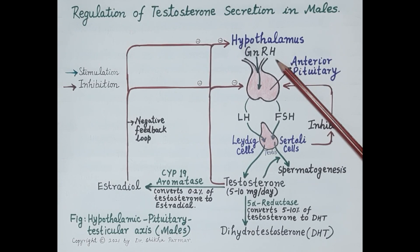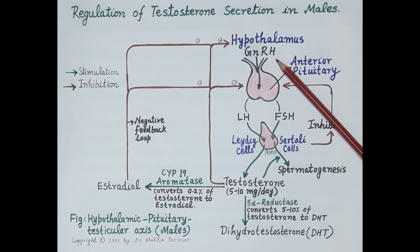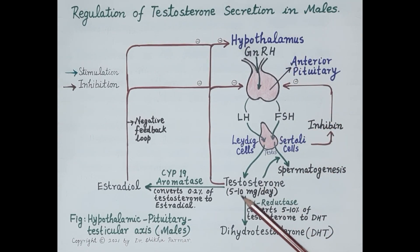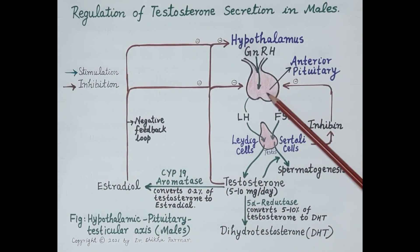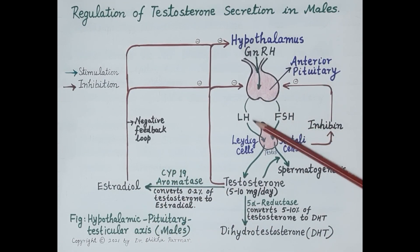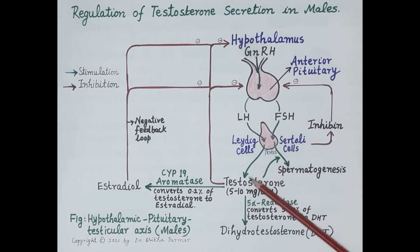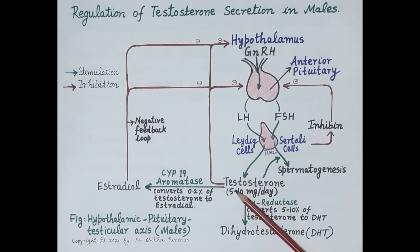A fall in GnRH from the hypothalamus causes a fall in the level of testosterone. Additionally, increased estradiol in the blood also inhibits the anterior pituitary, causing a fall in LH secretion. Reduced LH secretion also reduces the level of testosterone in the blood.